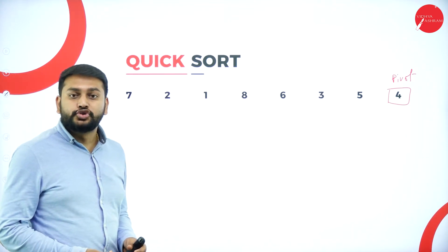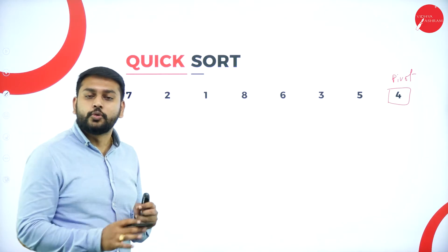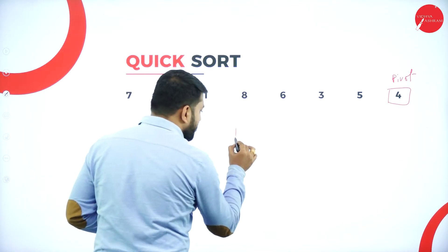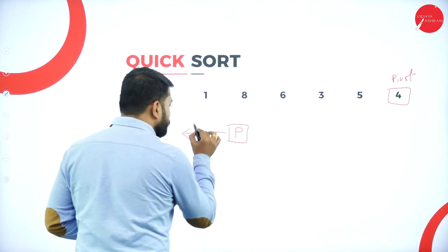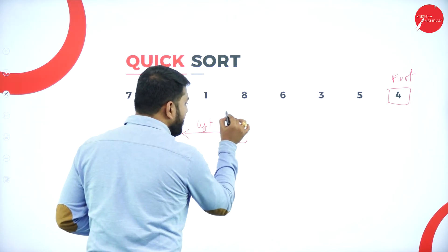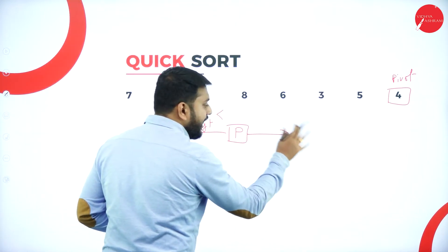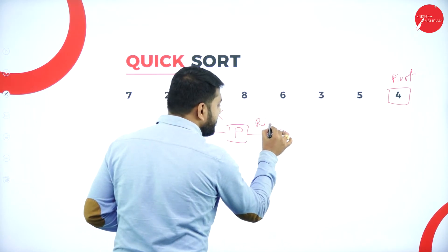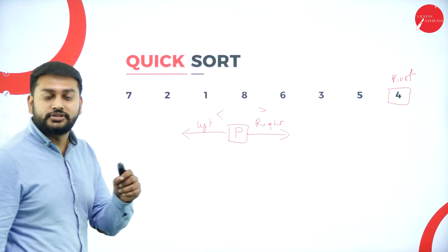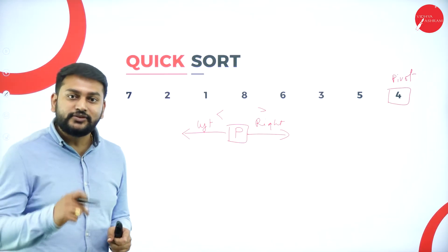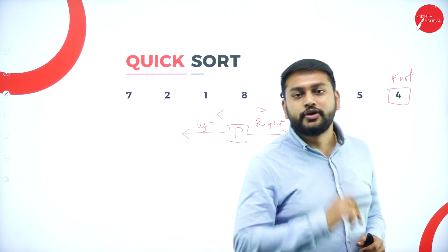Why are we considering this as pivot? When it comes to the pivot element, we have to remember one rule: when I consider this pivot element, whatever elements I have towards the left should be less than this pivot element, and whatever elements I have towards the right should be greater than the pivot element. This is the condition I need to follow. Recursively, I have to keep following this until I get the sorted array.